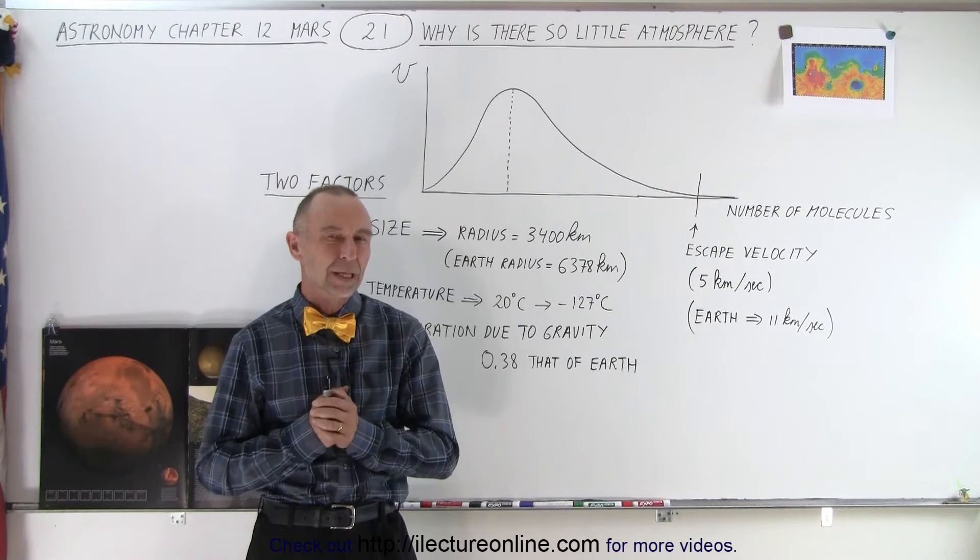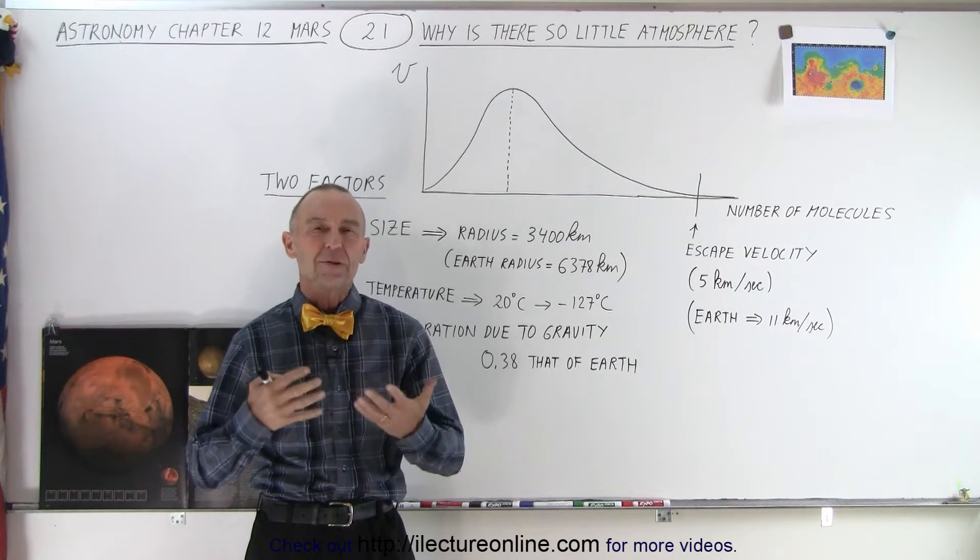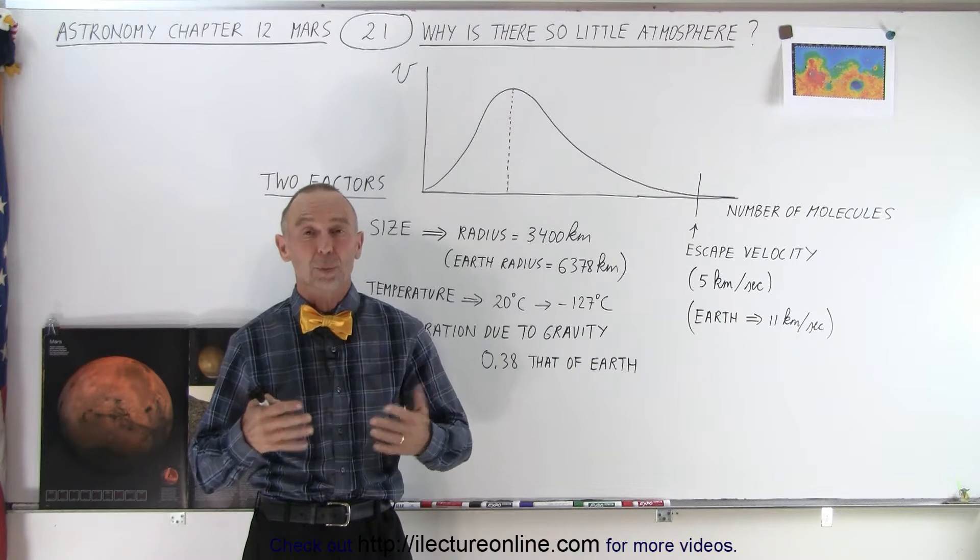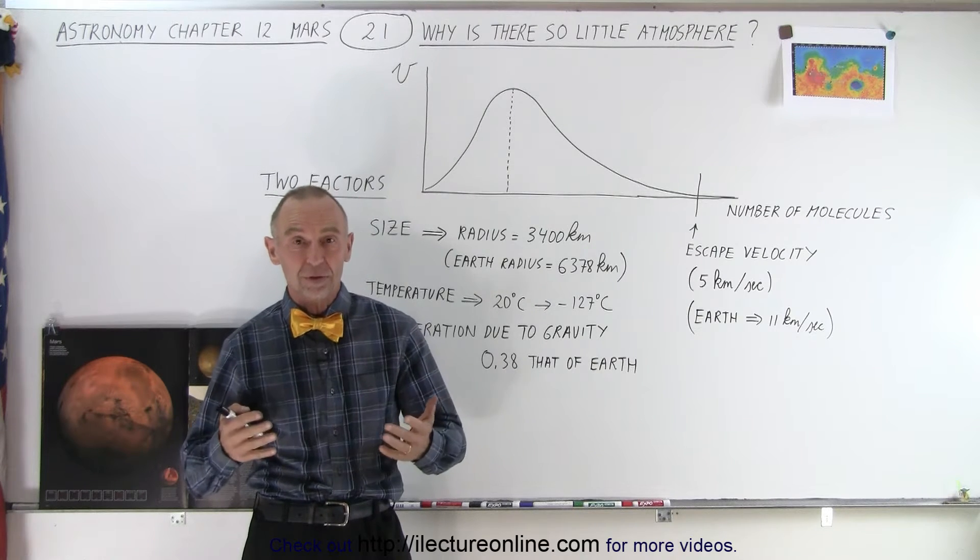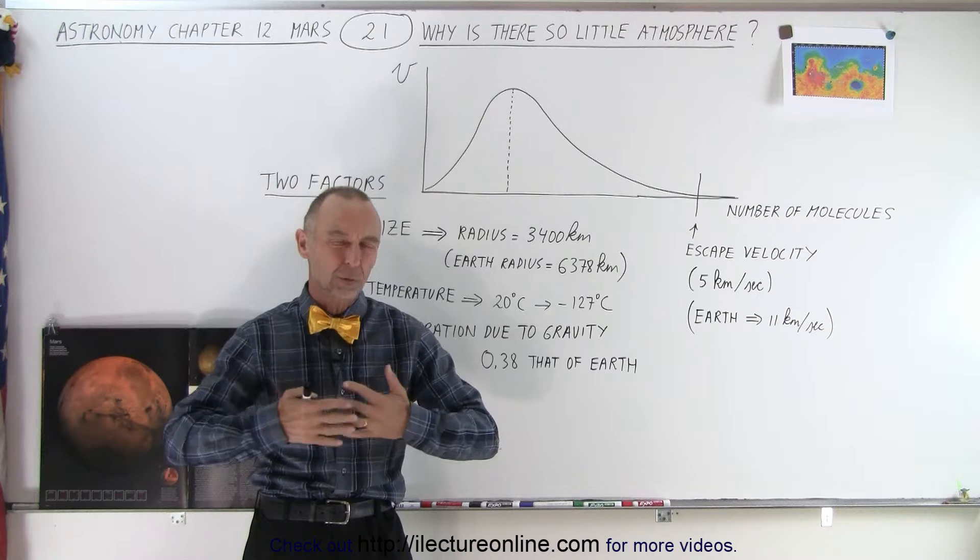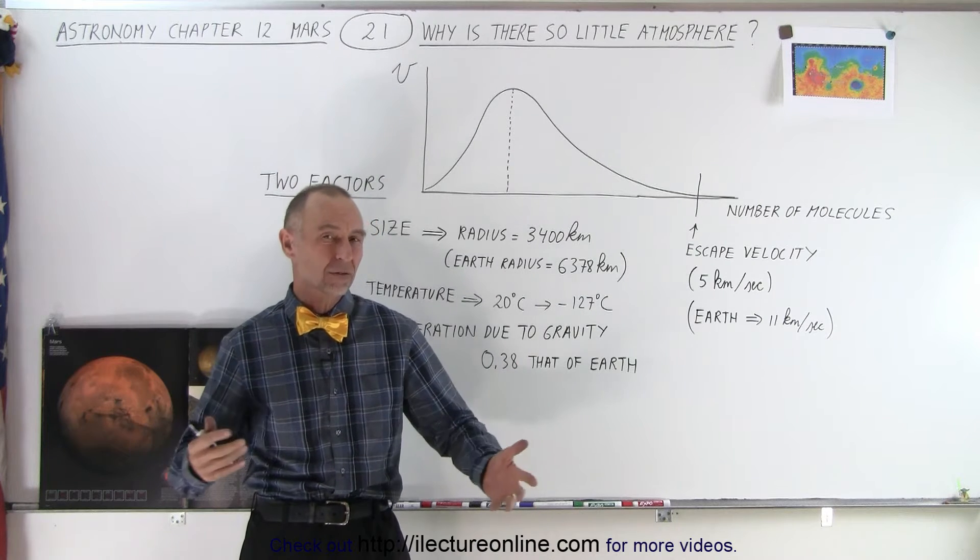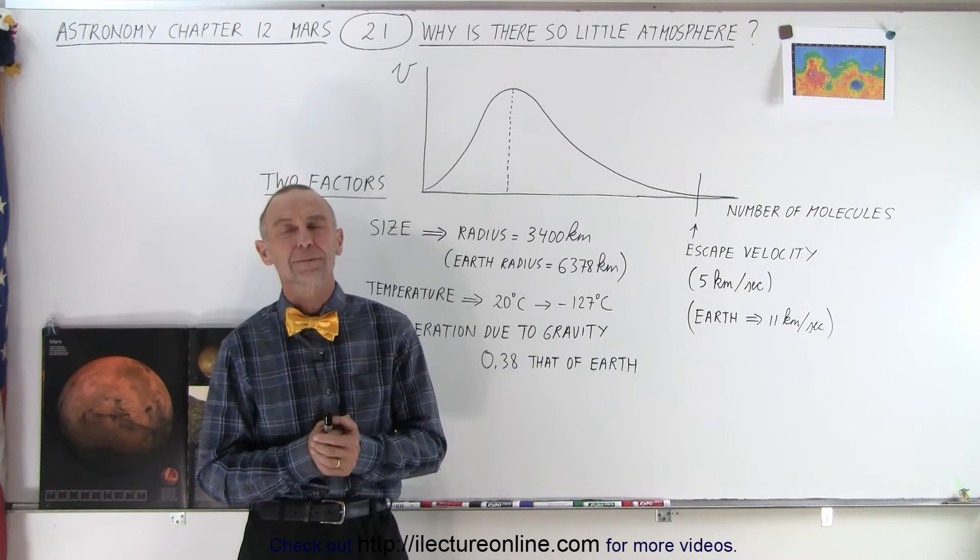Welcome to our lecture online. There has been ample evidence found that Mars at one point was a wet planet with rivers and clouds and rain and erosion and oceans and lakes. Yes, all that was there.